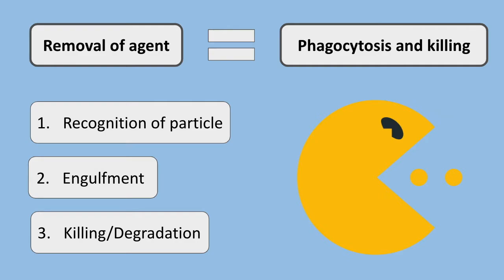This process occurs in three steps. The first is recognition and attachment of the particle to be ingested — we want to make sure the white blood cells are attacking the right particles — followed by engulfment, which is formation of a phagocytic vacuole by the white blood cell, and then finally killing or degradation of the ingested material.